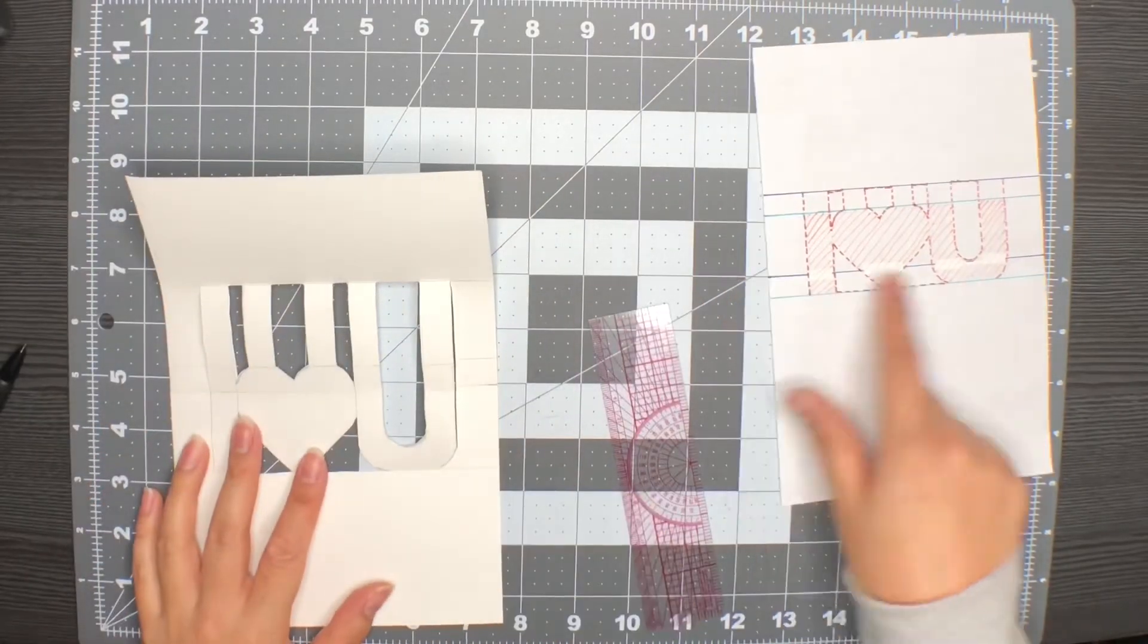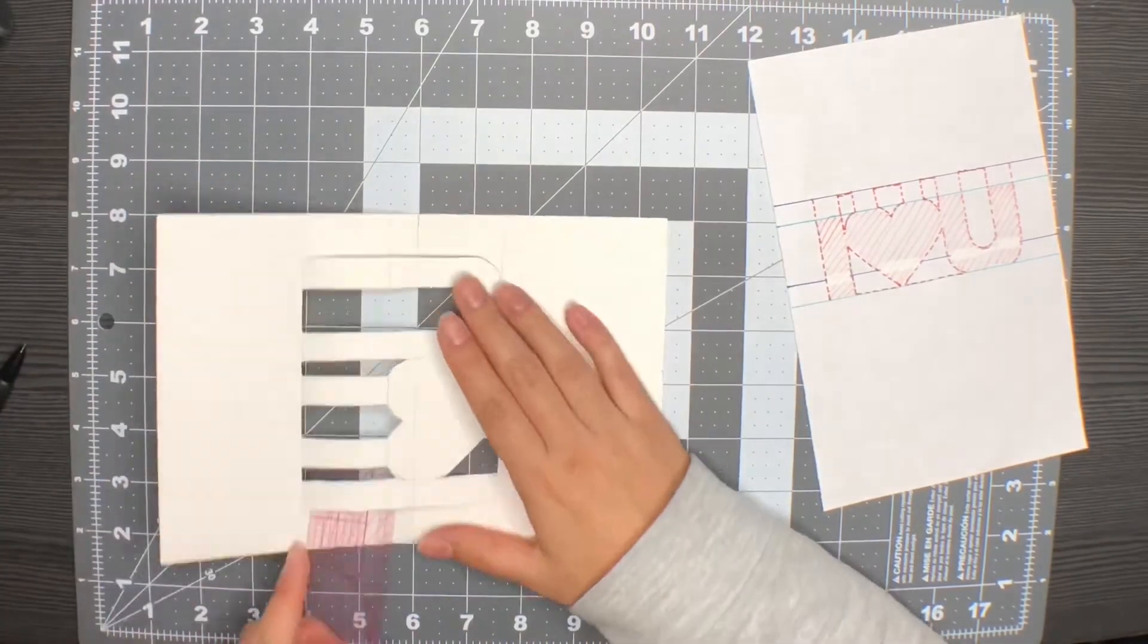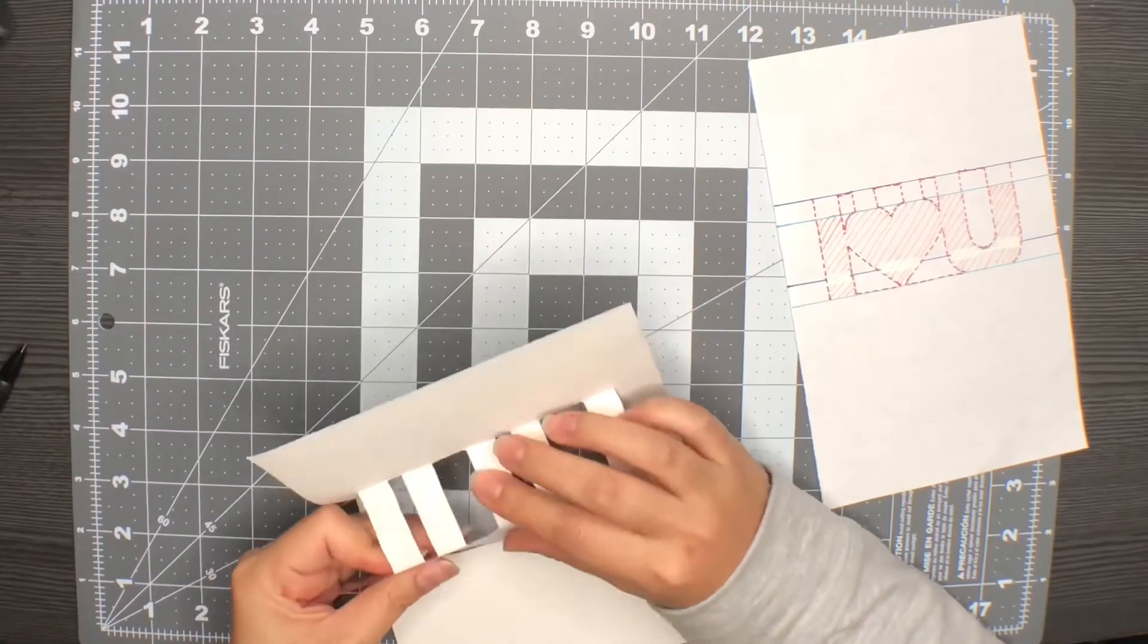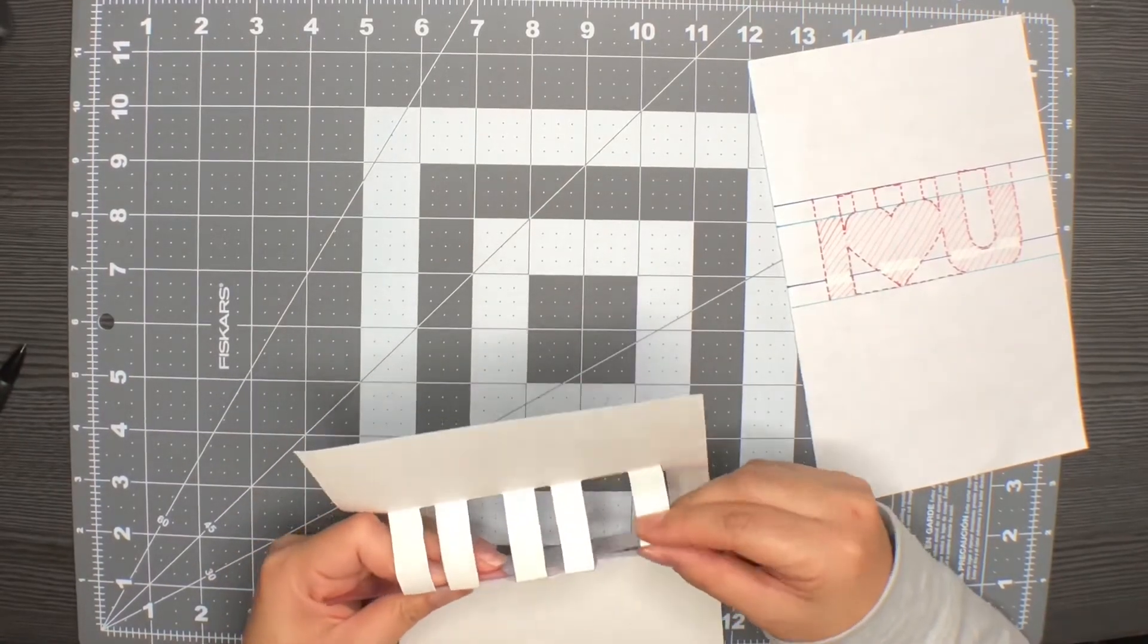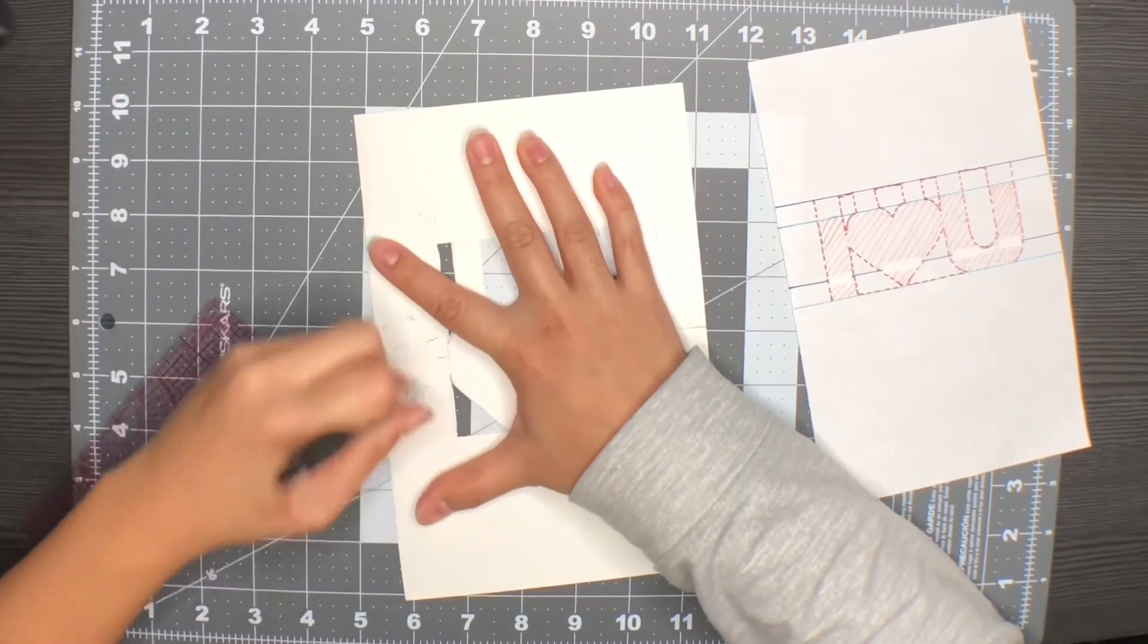The next crease is the fold line. Now we will slip the ruler through so that we can create the crease at the top of the letters. You can finally erase those pencil lines.